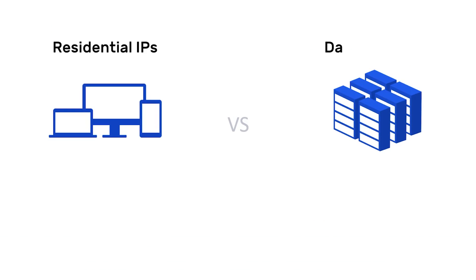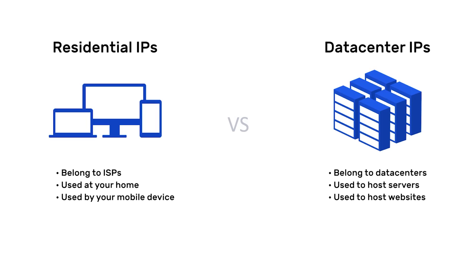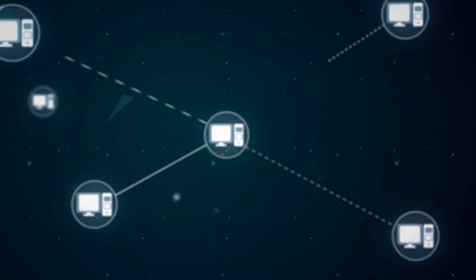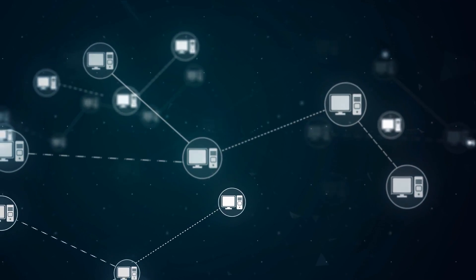Generally, there are two categories of IP addresses that websites look for: residential IPs and data center IPs, and that is very important to understand. Data center IPs belong to data centers and are generally used to host servers, different databases, and websites. Residential IPs, on the other hand, belong to internet service providers and are typically used by your home or mobile devices. Websites trust residential IPs more simply because it is not very common that normal website visitors connect from a data center IP.